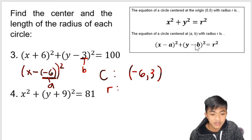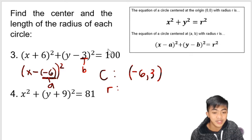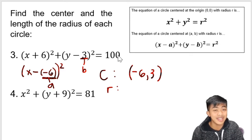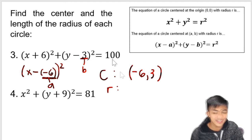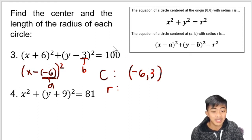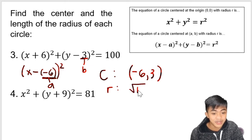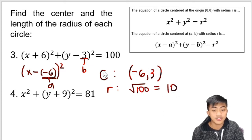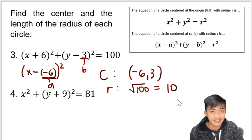Now, what about the radius? In this form, the radius is squared. So here the radius is already squared, but what is the number before it was squared? The easiest way is to just take the square root of that number. The square root of 100 — the radius will be 10. So the center is at (negative 6, 3) and the radius is 10 units.